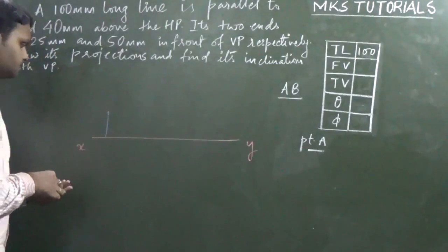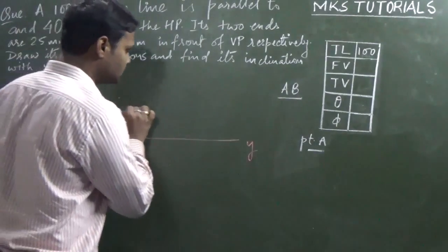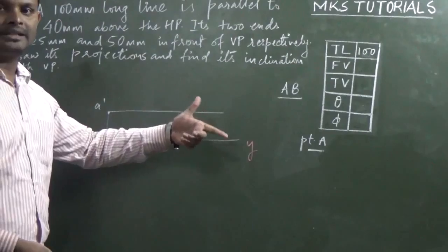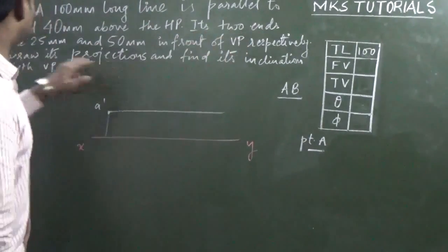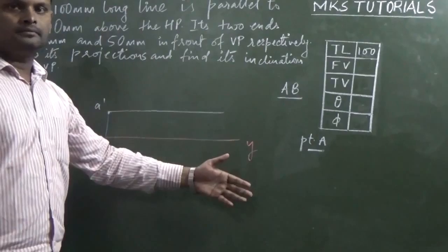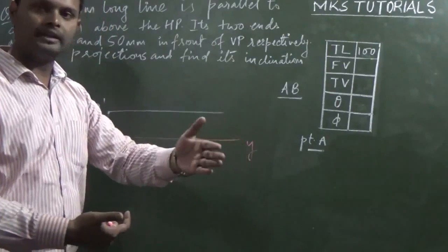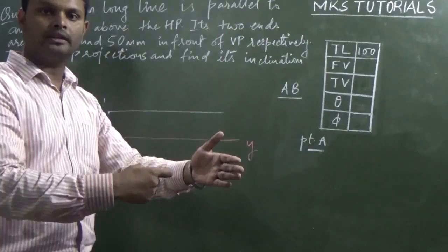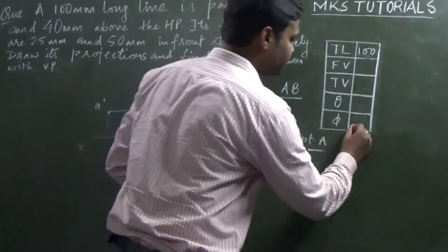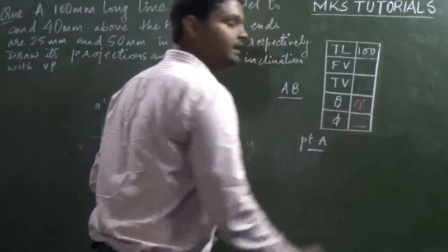This is my point a dash. If a dash is here then b dash is parallel, but I don't know exactly where because your line is parallel to HP but inclined to VP. Its two ends are 25mm and 50mm in front of the VP. One end is 25mm but the other is 50mm, so the line is inclined to VP. That's why I asked for its inclination with the VP. Since this line is parallel to HP, theta is 0 degree.